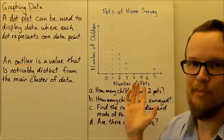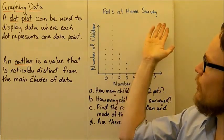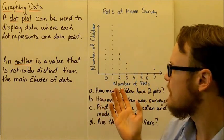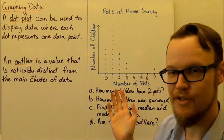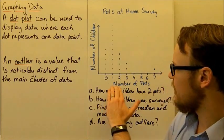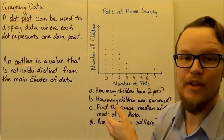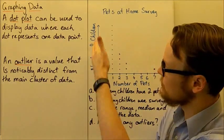For our example, here we've got a dot plot and the title is Pets at Home Survey. This is showing the number of pets that each student, each person surveyed, has at home. The number of pets is along this axis here and the number of children that said they had that number of pets is on this axis here.